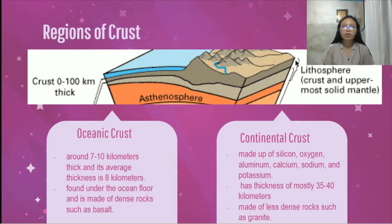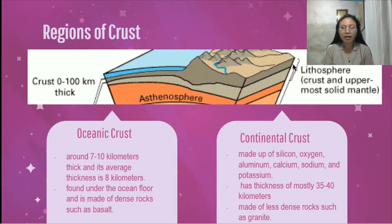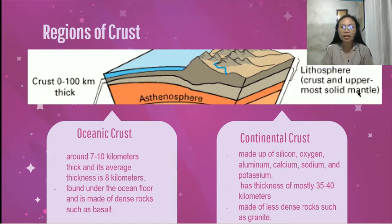In this picture, we can also notice the lithosphere — the combination of the crust and the uppermost solid mantle. So this is the lithosphere, the outermost solid part of the earth. It is composed of the earth's crust and uppermost solid mantle.